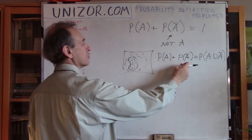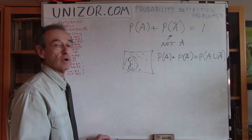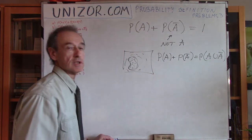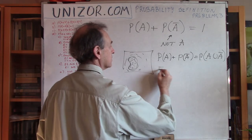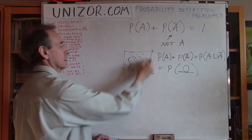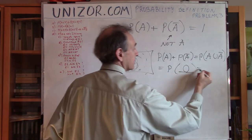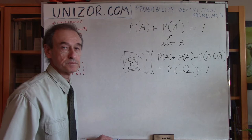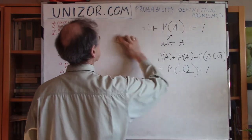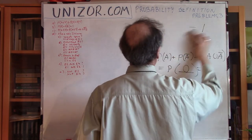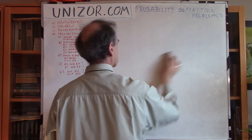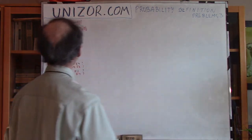Since A and not-A are mutually exclusive — they obviously don't have any common elements — the sum of their probabilities is the probability of their union. And what is their union? It is the probability of the entire sample space, which I call omega. The entire sample space by definition equals 1. These are just illustrative examples of the material presented in the previous lectures.